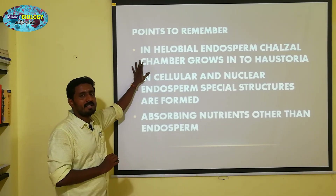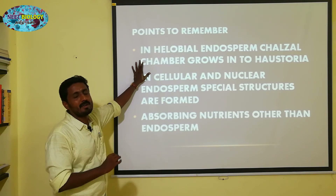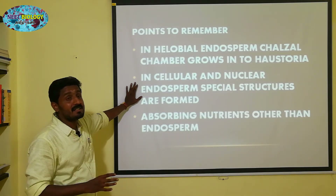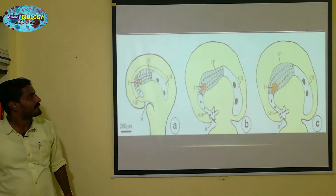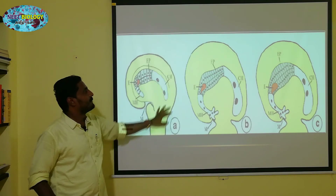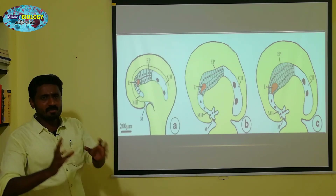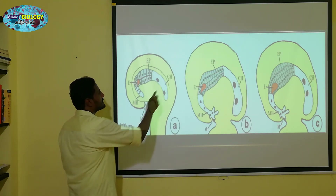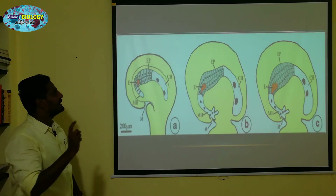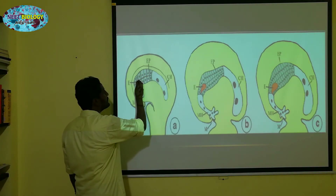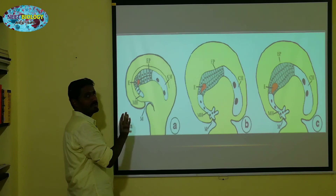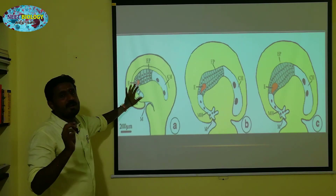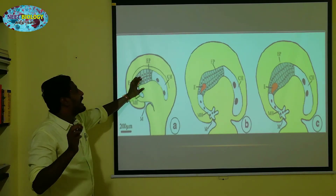In the helobial endosperm, there are structures in this region called haustoria. In cellular and nuclear endosperm, there is also a specialized structure. Any kind of endosperm will form haustoria in the micropylar region and chalazal region. Haustoria will be formed. Endosperm provides nutrients to the embryo, and at the same time, haustoria also help in the development of the embryo by getting nutrients other than the endosperm.